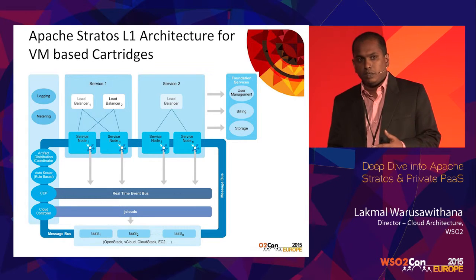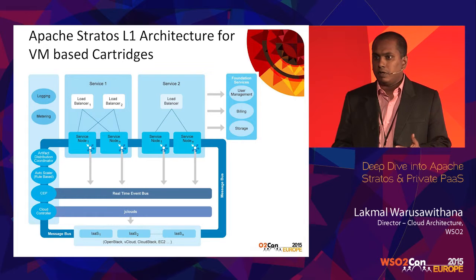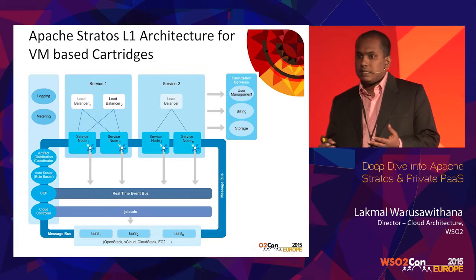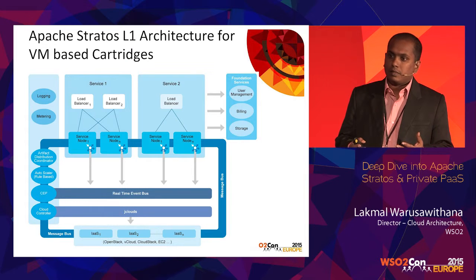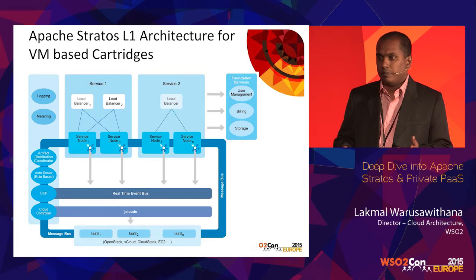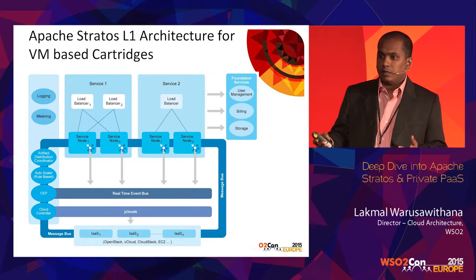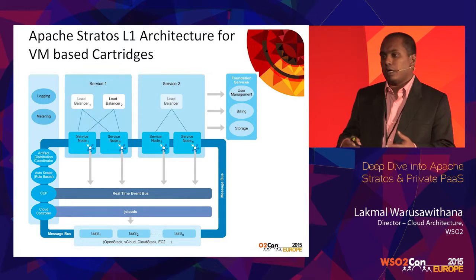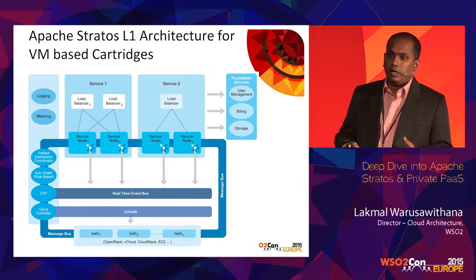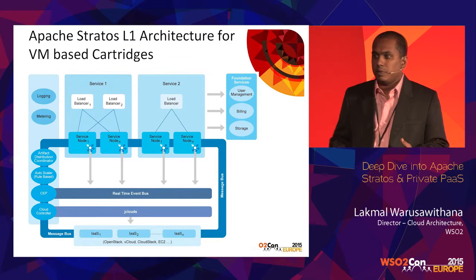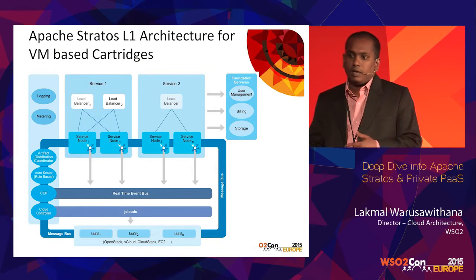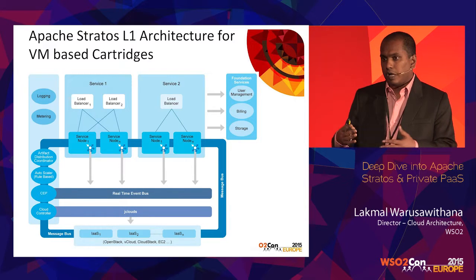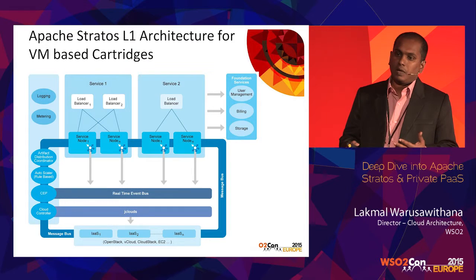All communication in Stratos uses a standard communication method — a message bus topic-based pub-sub mechanism. This gives all users the ability to extend the Stratos platform to their own environment. For example, if you want to get information from a particular cluster, you only need to subscribe to the relevant topic. If you want to be notified when a cluster member goes down, subscribe to the topology topic and write your own query for alerting. There is no proprietary binding in the pub-sub, so you can easily subscribe and extend as needed.